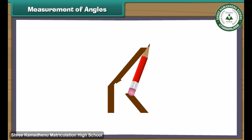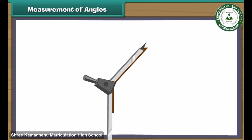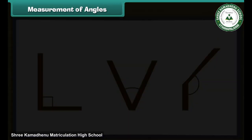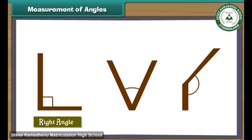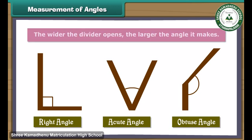Now consider the letter K of the English alphabet, modified to show an obtuse angle. Place the divider on the figure such that one arm and common point coincide with those of the figure. The other arm of the divider lies to the right of the other arm of the figure, meaning the figure makes an angle greater than the right angle — that is, an obtuse angle. Therefore we can measure right, acute and obtuse angles with a divider. The wider the divider opens, the larger the angle it makes.